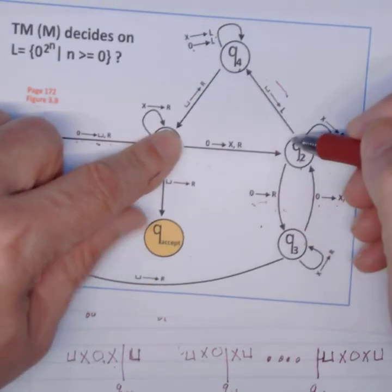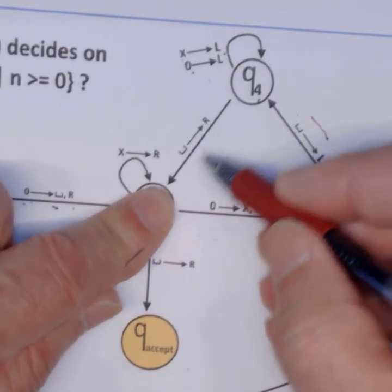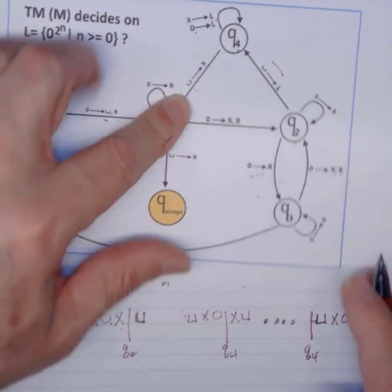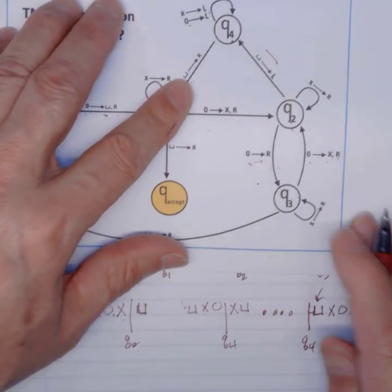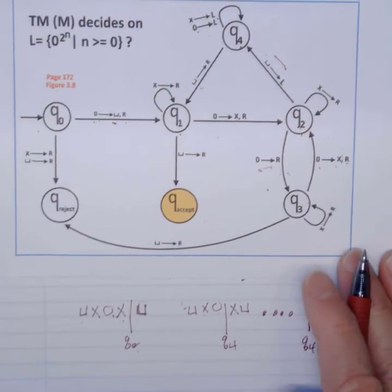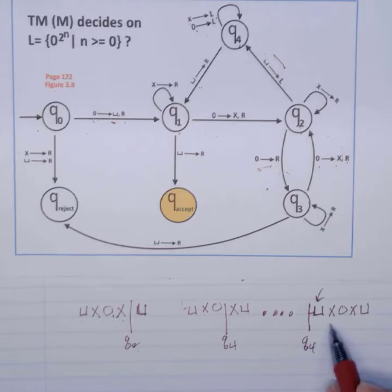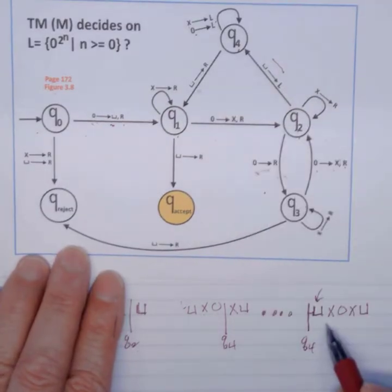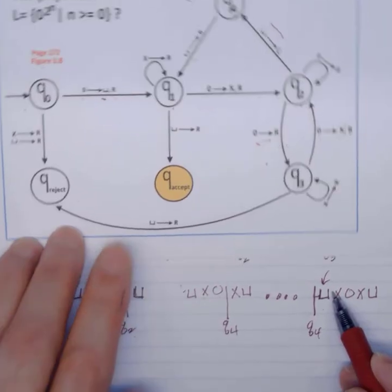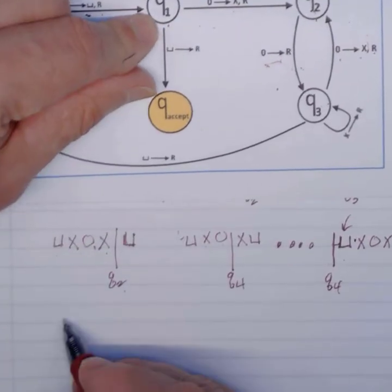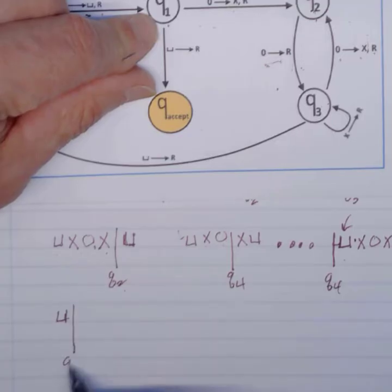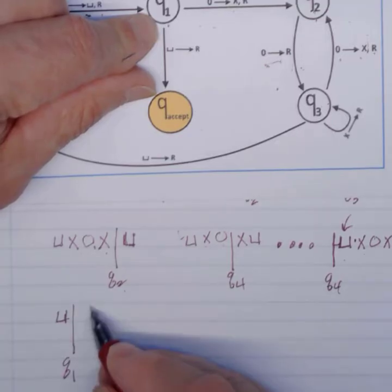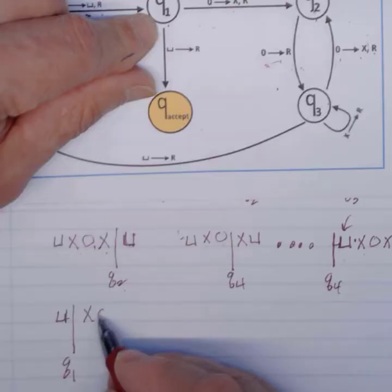At Q4, do I have any other transition I can take? Yes, I can take this transition when I see a blank. That's my blank in there. So when I see a blank, I move to the right, and then go to Q1. So here's my blank, move to the right, Q1, and there is an X, an 0, an X, and a blank.